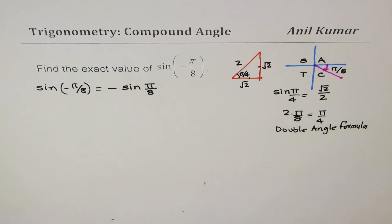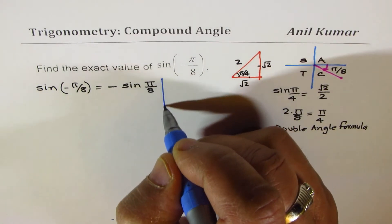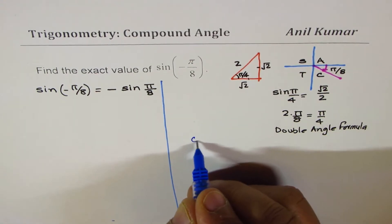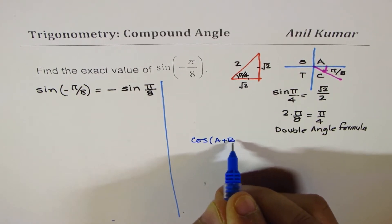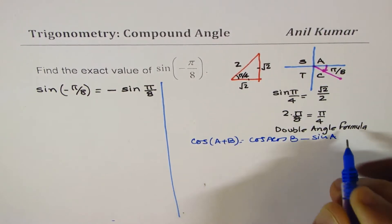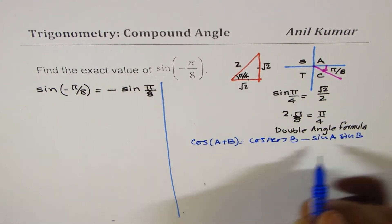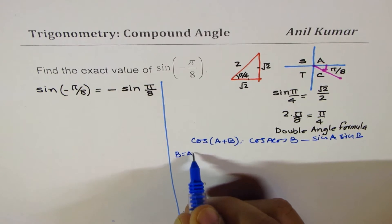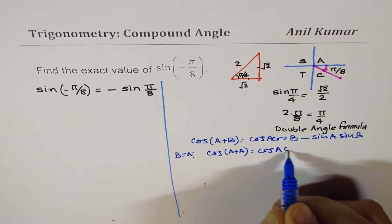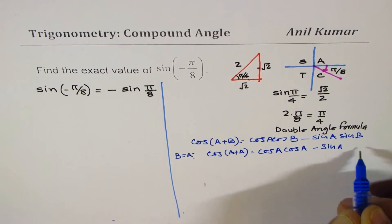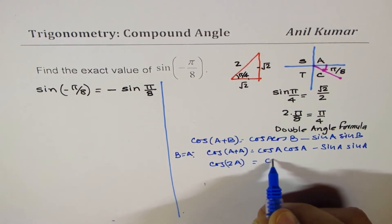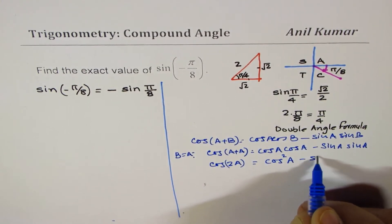For the benefit of students who do not remember the double angle formula, let me derive it here. We know that cos(a+b) = cos(a)cos(b) − sin(a)sin(b). If I write b = a, then we get cos(a+a) = cos(a)cos(a) − sin(a)sin(a), that is cos(2a) = cos²(a) − sin²(a).